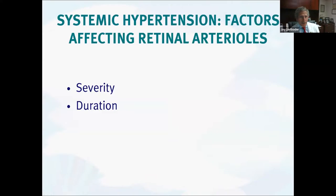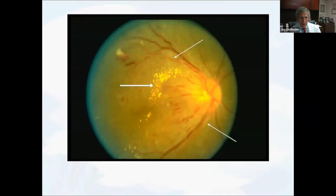Hypertension — both the severity and duration of the disease can affect what we see in the eye with hypertensive retinopathy. This is a good example of a patient who has the so-called copper wiring of the retinal arterioles, as well as flame-shaped hemorrhages and exudates from leakage from the blood vessels in the posterior part of the retina.